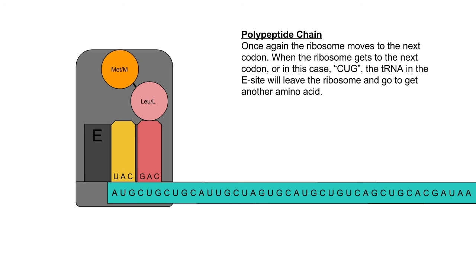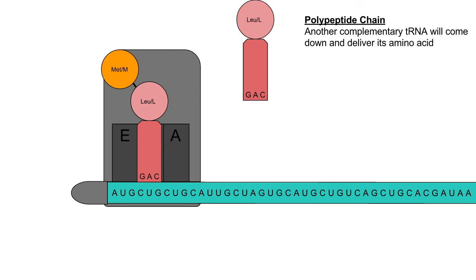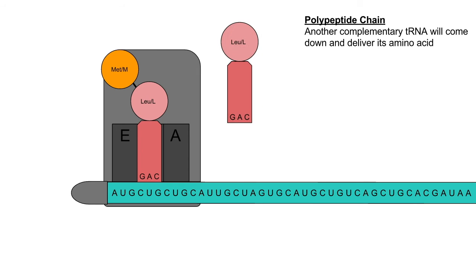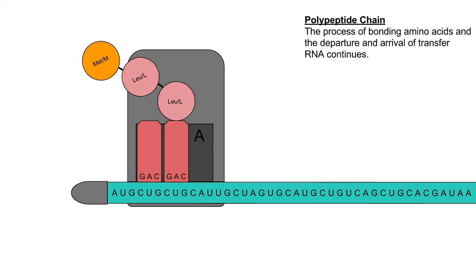When the ribosome moves down to the next codon, which happens to be C-U-G, the amino-acid-less tRNA in the P site will be moved to the E site, where that tRNA will go to the cytoplasm and get another amino acid. Another complementary tRNA will come down and deliver its amino acid. The process of bonding amino acids and the departure and arrival of tRNA continues, with more and more amino acids being added.